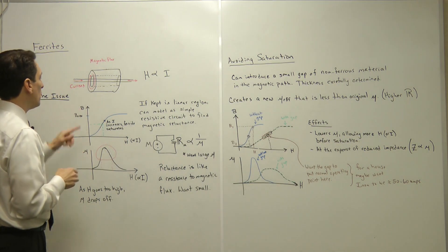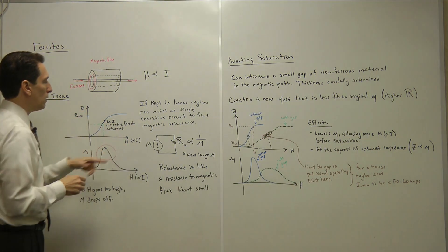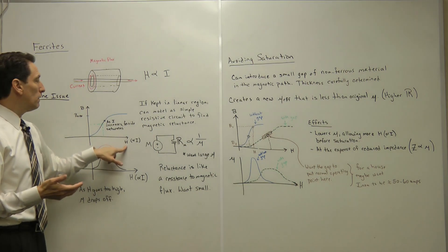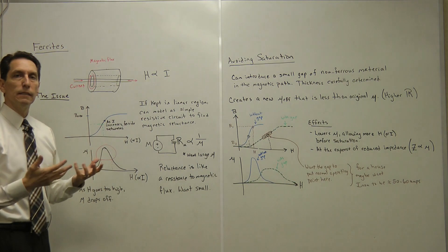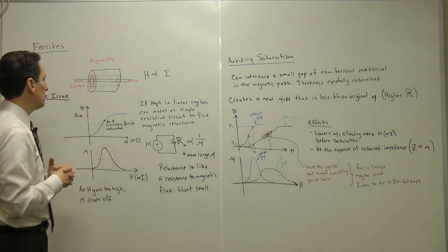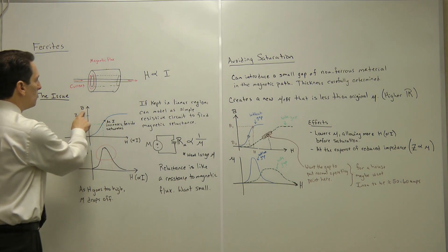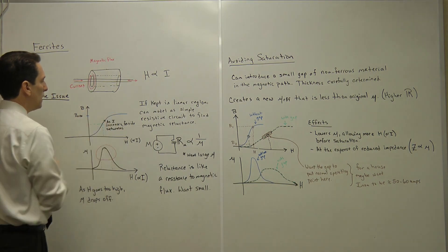If you look up any given ferrite, you'll find a BH curve, where H is the magnetic field that's developed from some currents. B is the magnetic flux density, essentially how many magnetic flux lines there are through a given area. If you look at this curve, it sort of looks like an S.